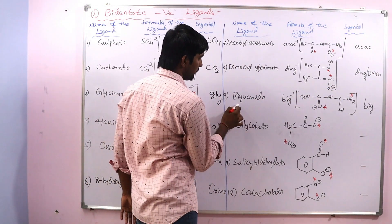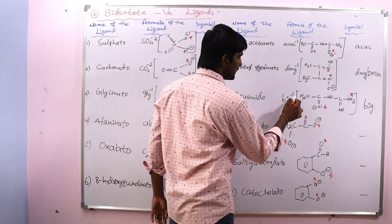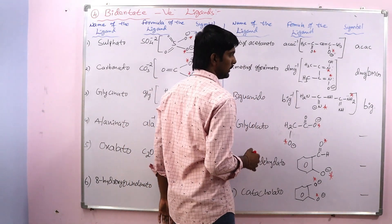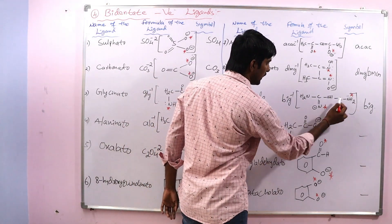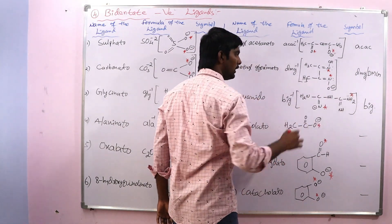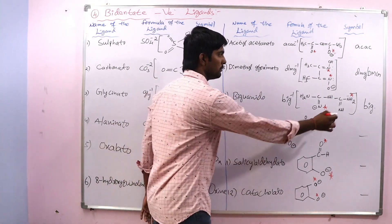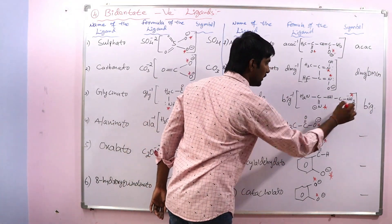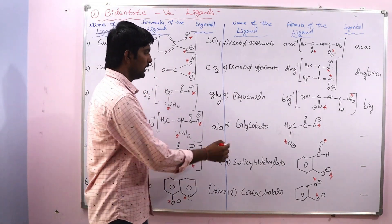Next is biguanido, BIG⁻¹. Here two nitrogen atoms are the donor atoms. The symbol is BIG.